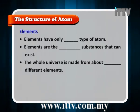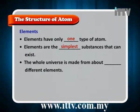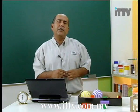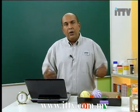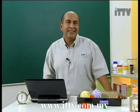Elements have only one type of atom and are the simplest substances that can exist. The whole universe is made from about 90 different elements. Each element is made out of a unique atom. If an element has only one type of atom, then a compound has more than one type of element.